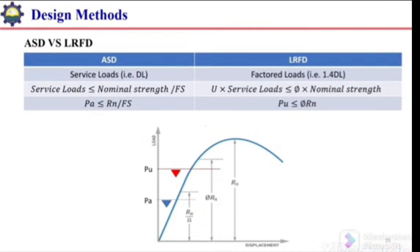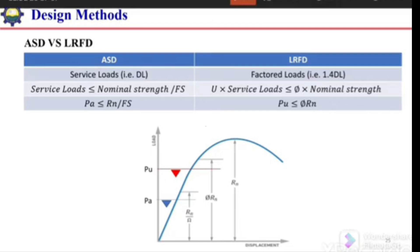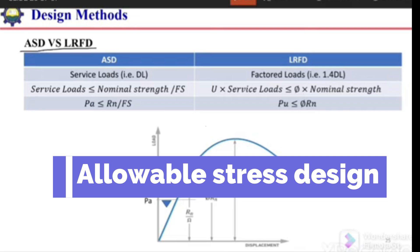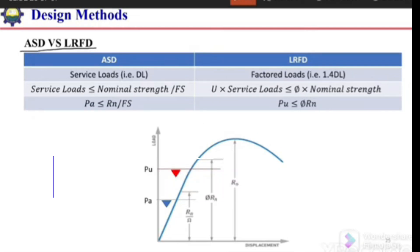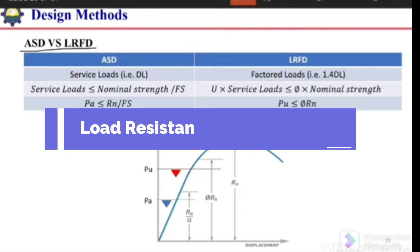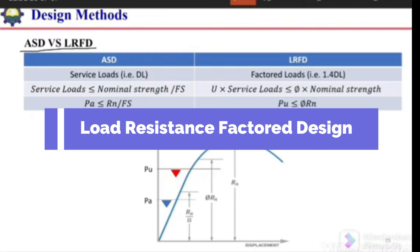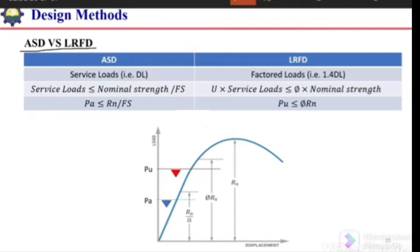There are two different methods available for the design of steel structures: ASD and LRFD. ASD means Allowable Stress Design method, and LRFD means Load Resistance Factor Design.